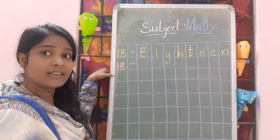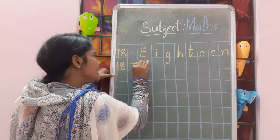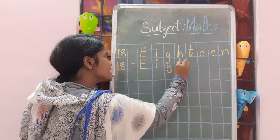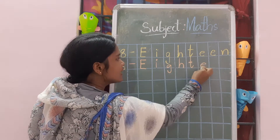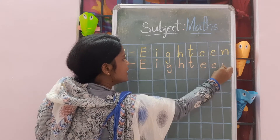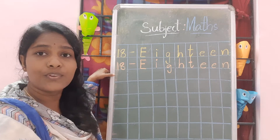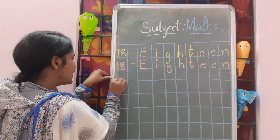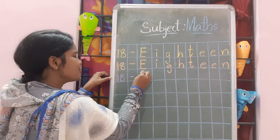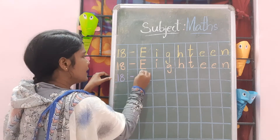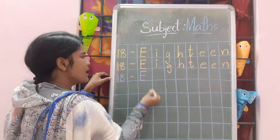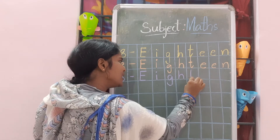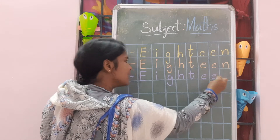Finish writing 18. Keep a dash in the middle of the box and write capital E. 18 — dash — keep a dash in the middle of the box and write in the middle of the box. 18: E, I, G, H, T, E, E, N.